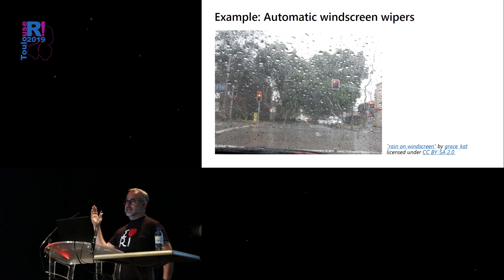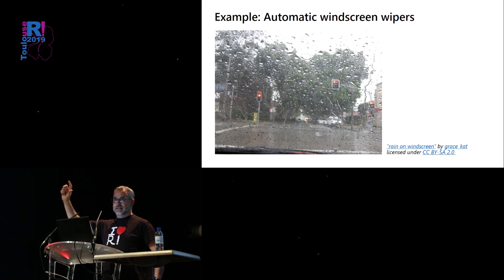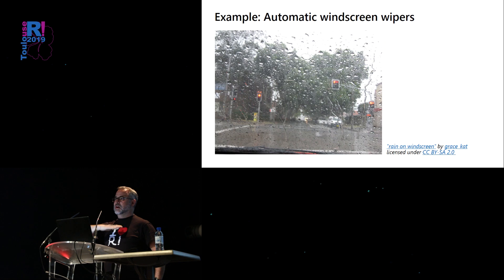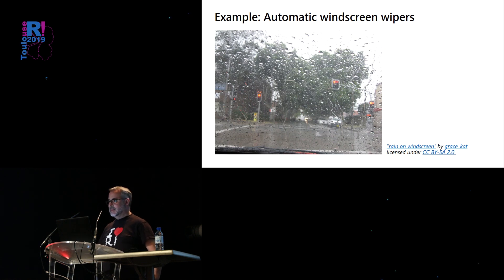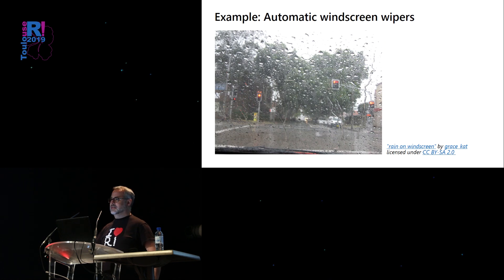That camera is also used for another feature in Teslas: there isn't a manual control for the windscreen wipers. The windscreen wipers come on automatically when the car detects that it's raining. The car detects rain by analyzing the image it sees through the camera, looking for raindrops. If it detects raindrops, it turns the windscreen wipers on. That sounds simple, but detecting raindrops in a camera image is not trivial — it's done using machine learning vision techniques. In the early days of this feature, Tesla had a problem: if you were driving into the sunset while it was raining, or into a tunnel while it was raining, the automatic wipers wouldn't turn on or off as required.